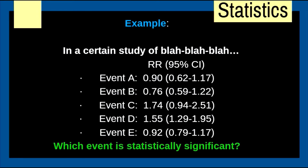Example: a certain study produces several values. Which event is statistically significant? The answer is D — because only in D does the confidence interval not include 1, which would mean embracing the null hypothesis, meaning we cannot reject it.